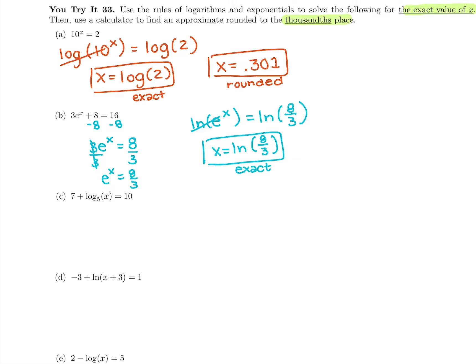And then to get the rounded answer, I'm just going to grab my calculator and use the ln button. ln of 8 thirds gives me 0.981, rounded to the third decimal place.